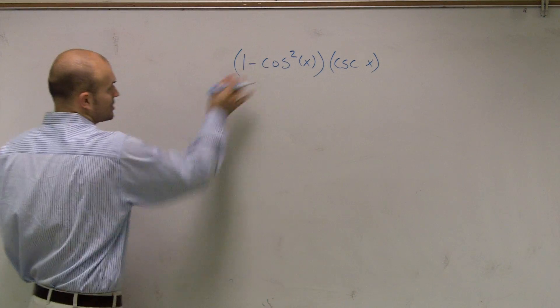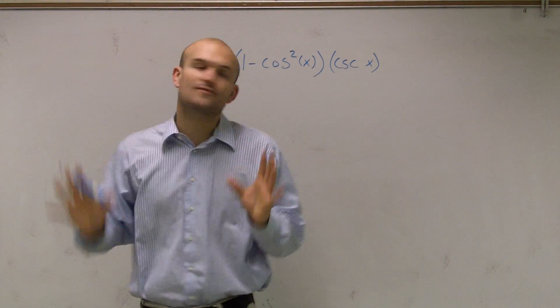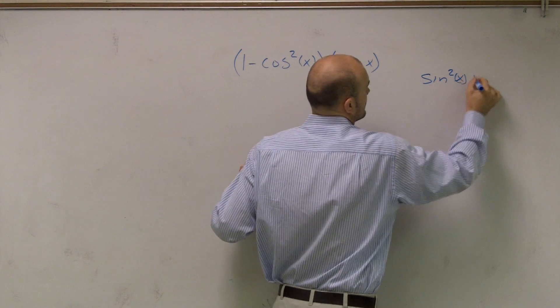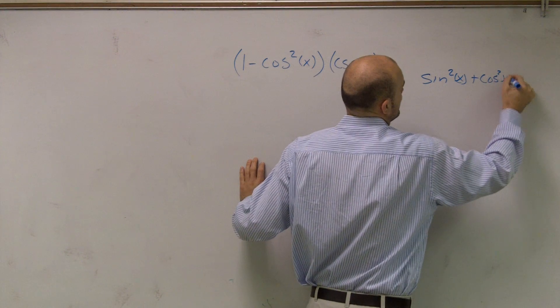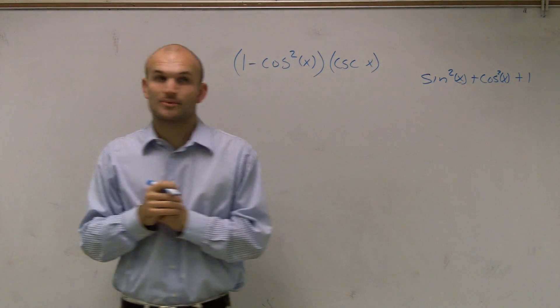All right, so I see this cosine squared. I automatically, first thing I do, I don't even try to do anything else, the first thing I want to do is write out my identity. OK, you should have that memorized. You shouldn't have to look that one up at all.